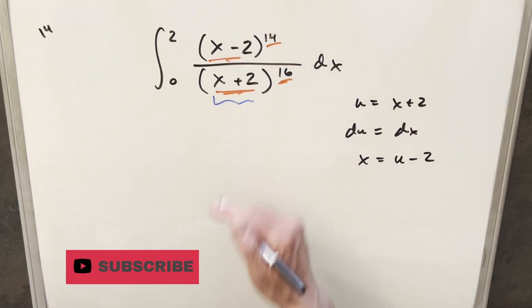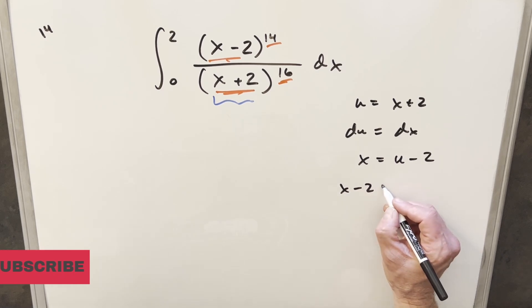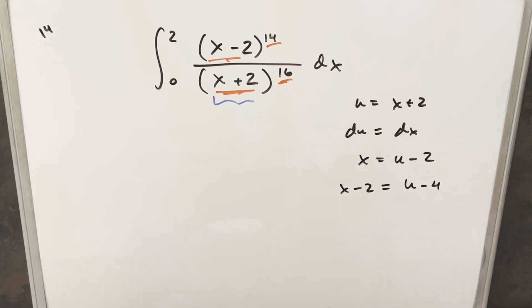And then actually what I really want is I want this x minus 2 value, so let's just find that. So we'll have x minus 2, subtracting 2 on both sides. This is going to become u minus 4 over here.